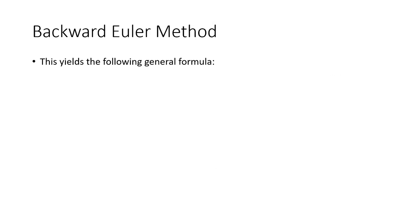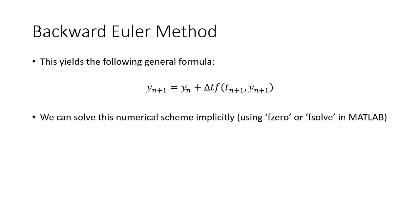So ultimately we end up with the following formula where y of n plus 1 equals y sub n plus delta t times the function at time n plus 1 and y of n plus 1. Now this is called an implicit solution scheme because y sub n plus 1 appears both on the left side and the right side.